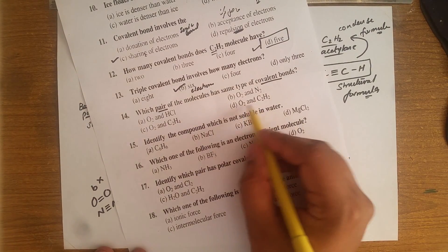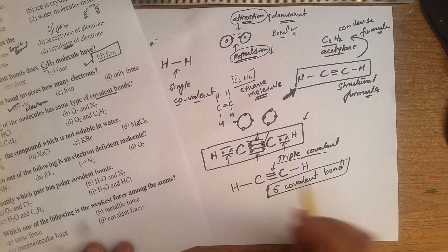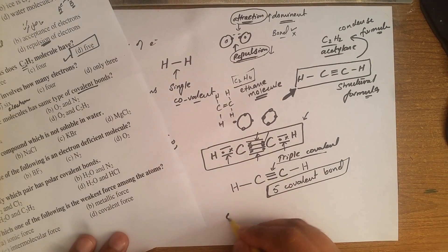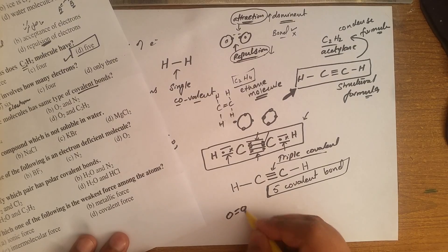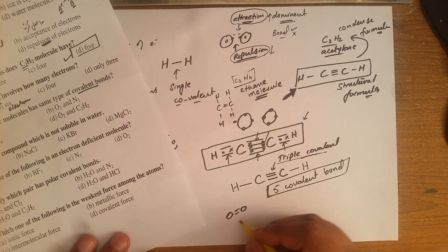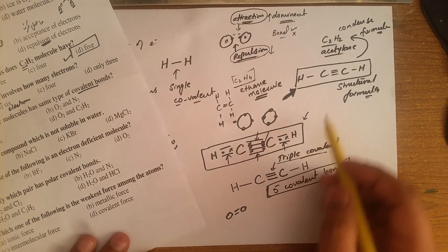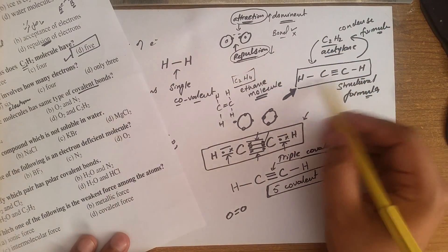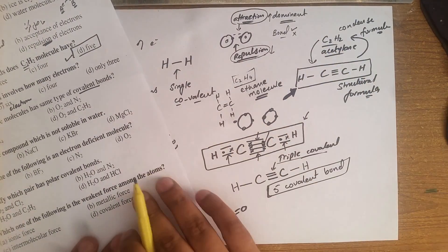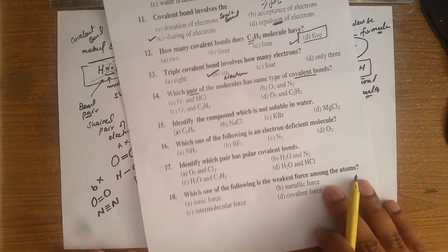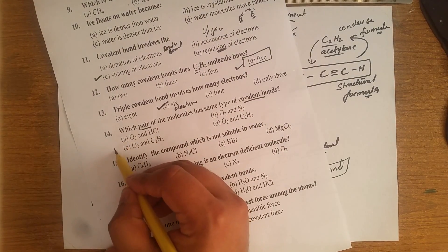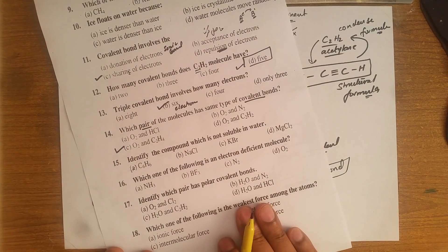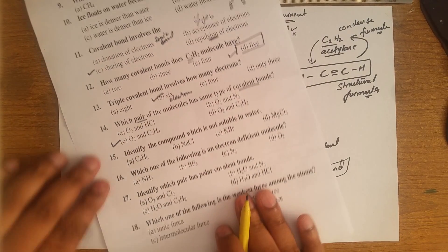The last option: O₂ has a double covalent bond, and C₂H₂ (acetylene) — let me think — I think that also has a double covalent bond? Actually, C₂H₂ has a triple covalent bond. So option C, pairing O₂ with C₂H₄, is the right answer.